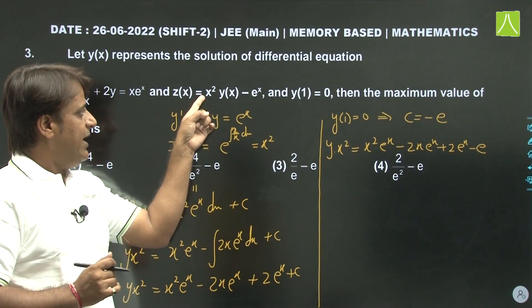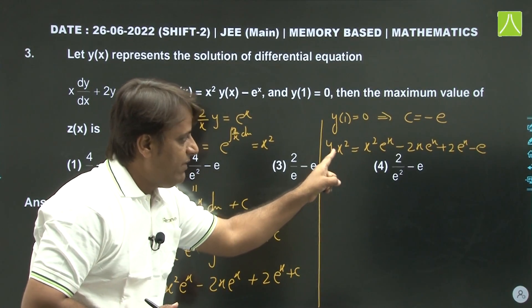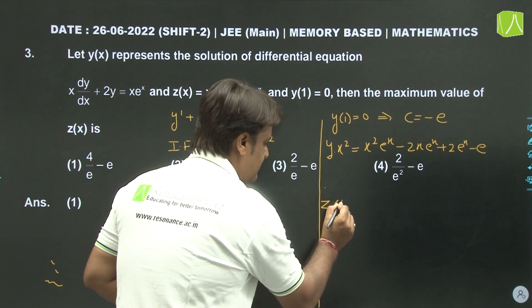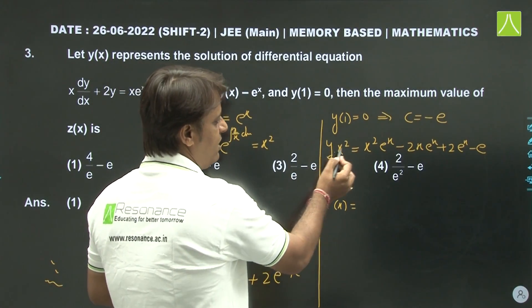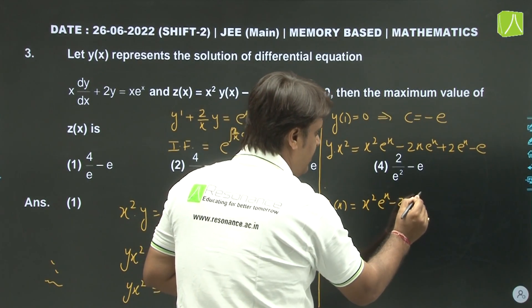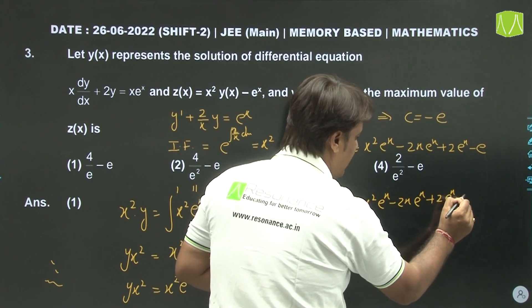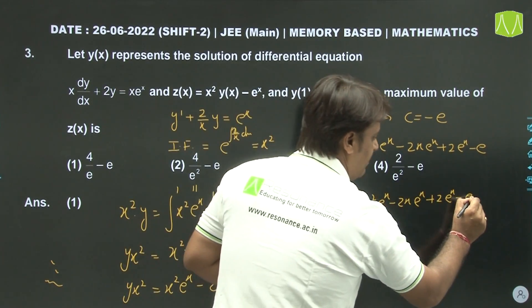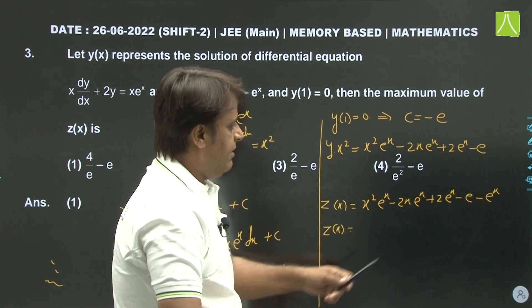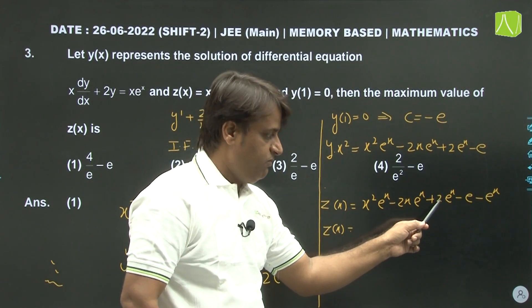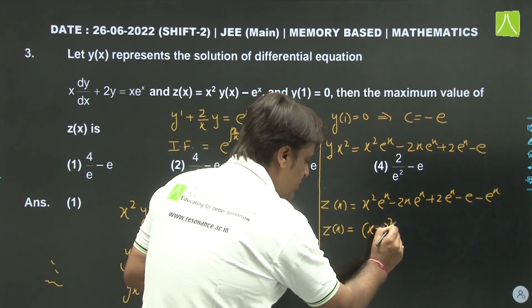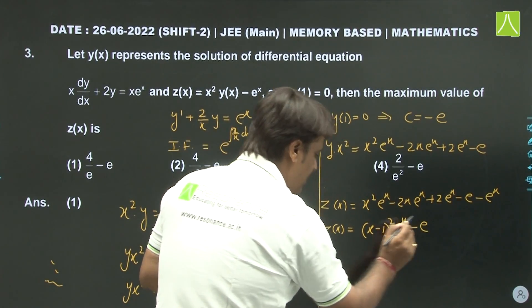Now z(x) = x² × y(x), and x² y(x) is already known. So z(x) = x² eˣ - 2x eˣ + 2eˣ - e. This simplifies to z(x) = (x-1)² eˣ - e.